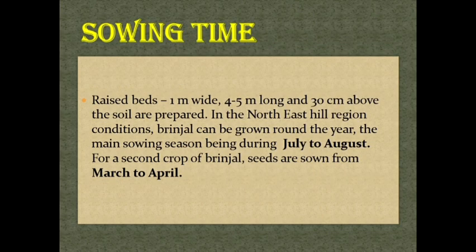Sowing time. Raised beds 1 meter wide, 4 to 5 meters long and 30 centimeters above the soil are prepared. In the northeast hill region conditions, brinjal can be grown around the year. The main sowing season is during July to August. For a second crop of brinjal, seeds are sown from March to April.